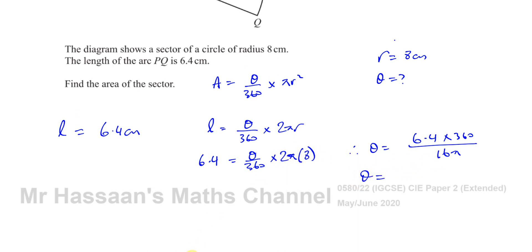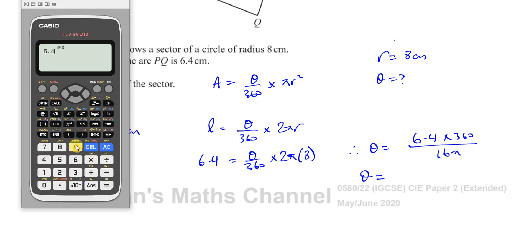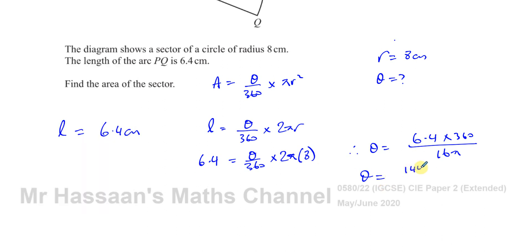So I'm going to leave it in terms of pi for now, just to keep things more accurate. So I'll have 6.4, put this in a bracket or fraction, times 360, divided by 16. I'll leave it like this for now. Okay, that gives me 144 over pi.